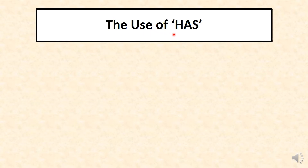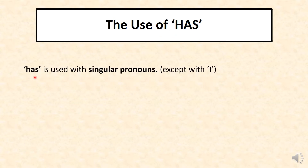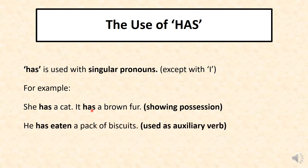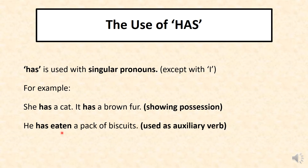Let's first talk about the use of has with the help of examples. Has is used with singular pronouns except with I. With I we will not use has, but with the rest of the singular pronouns we use has. For example: she has a cat. It has a brown fur. In this sentence has is showing possession. Has is also used as an auxiliary verb — for example, has eaten — showing that the sentence is written in present perfect tense.